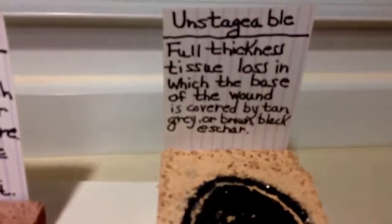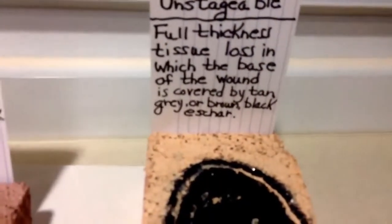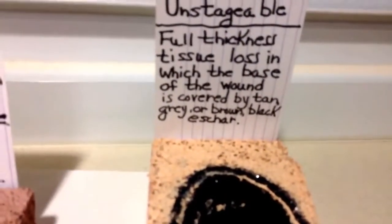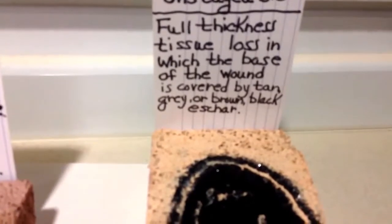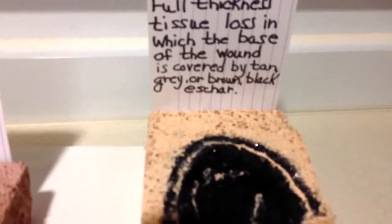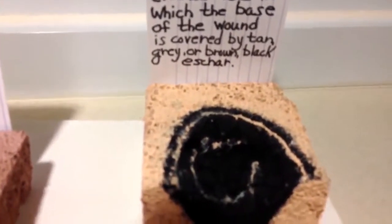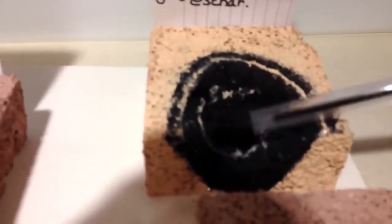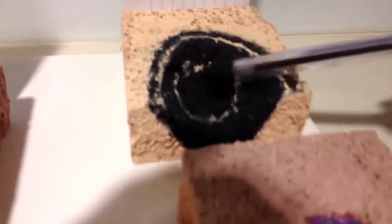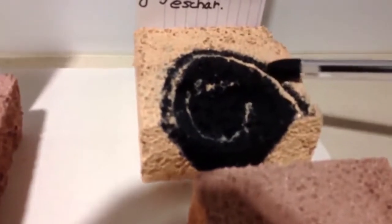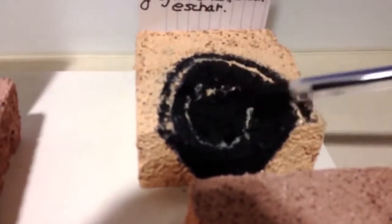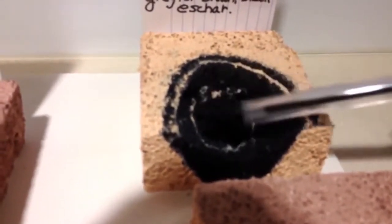We also have unstageable wounds, which are basically a full thickness tissue loss in which the base of the wound is covered by a tan, gray, brown, or black eschar. This is representing a black eschar forming right over the wound. That is not a stageable wound — that is known as an unstageable wound.